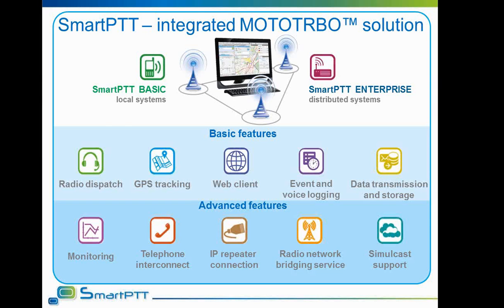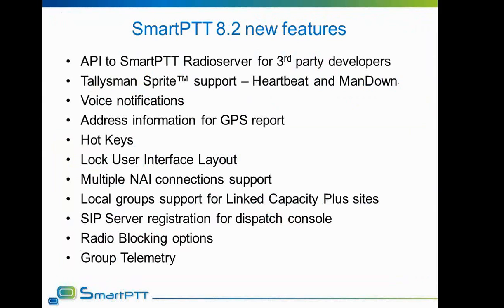Let's proceed to new features. New features include the following: API to radio server allowing third-party developers to use data and request information directly from our radio server; support of Talisman Sprite option board allowing heartbeat and man down features; voice notification within radio network; resolving GPS location data into address; utilizing hot keys to call pre-selected subscribers in one touch; locking views organization; support of multiple simultaneous connections to different NAI networks; local Link Capacity Plus groups support; registering dispatcher as SIP soft phone; new radio blocking options; and sending telemetry signals to groups.